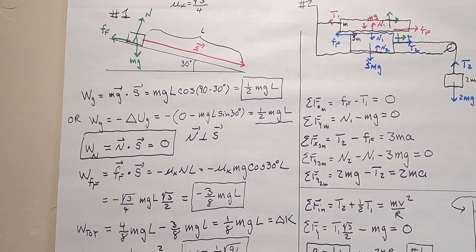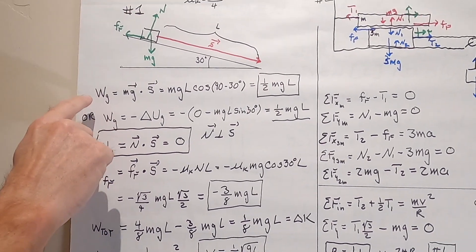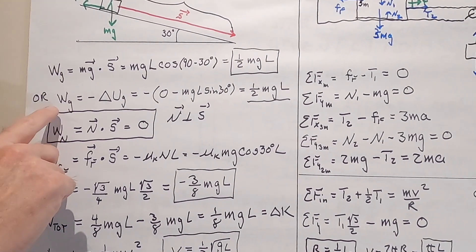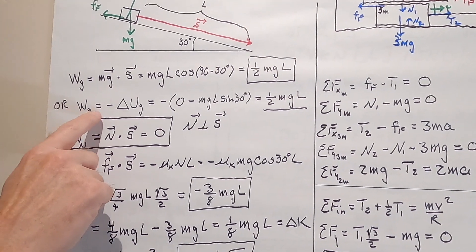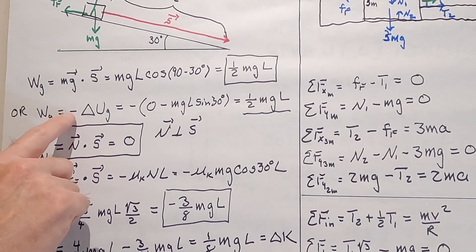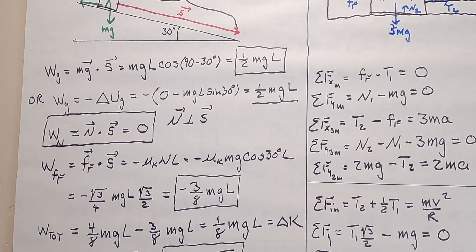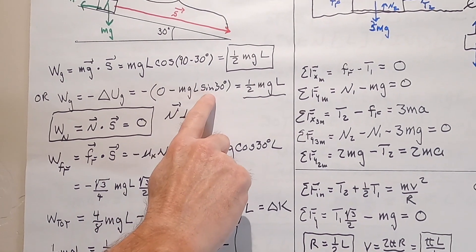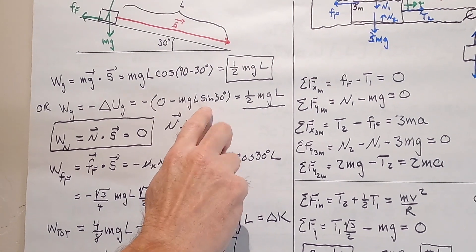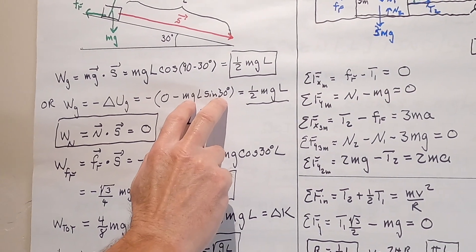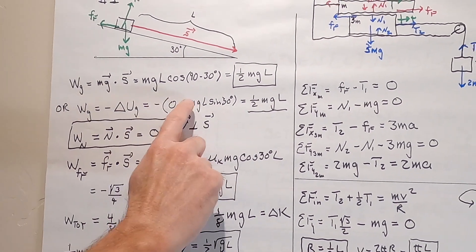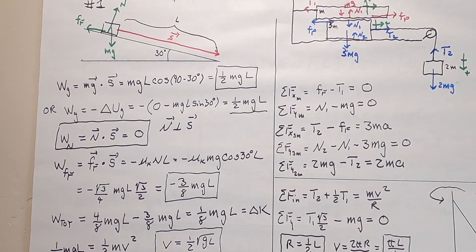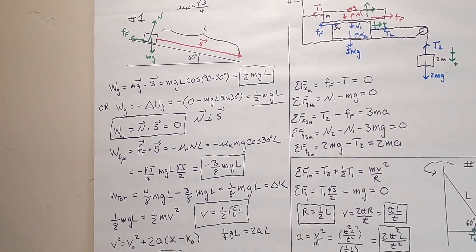Another way we could have done this is: because gravity is a conservative force, we could have written that work due to gravity is minus the change in potential, which is minus the final minus the initial. So this is the height, and the two minuses just give me one half mgh. It's the same thing. You could have done it either way.